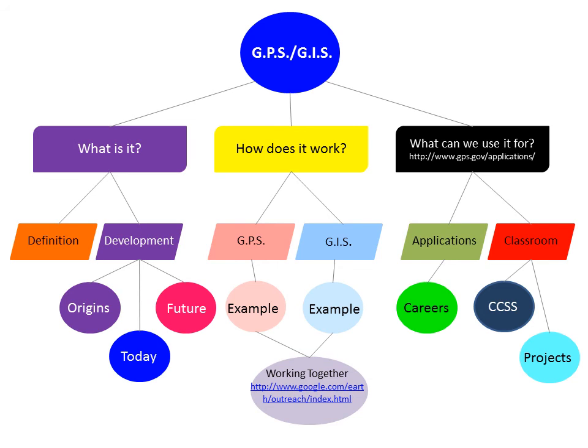Under Classroom I chose to outline Common Core State Standards and Projects. I chose dark blue for Common Core State Standards because it's almost the color of the map when you bring up the Common Core State Standards website. For Projects I chose a bright turquoise blue because it's different from all the other colors on my graphic organizer, and I think projects will be the most important topic of my major presentation — the most applicable for use in my classroom. That's my graphic organizer, thank you for listening.